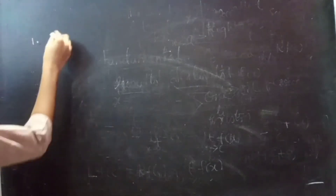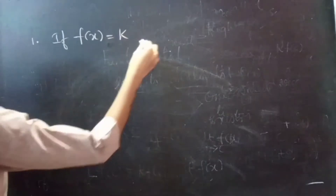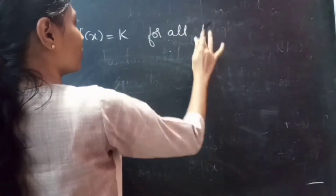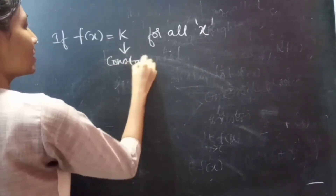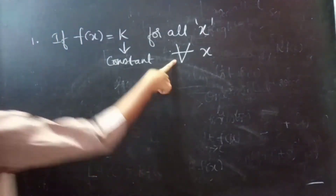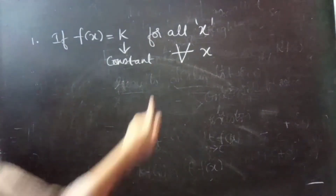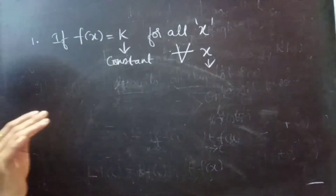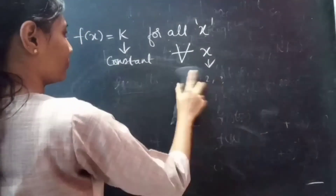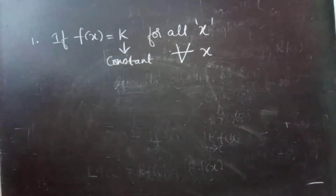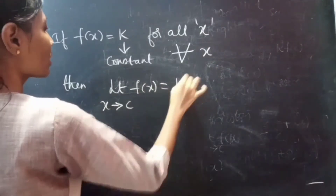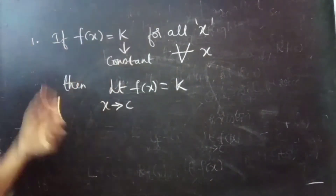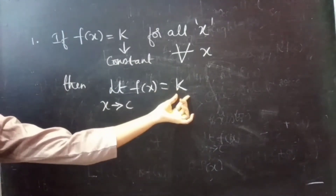So, first result: if f of x equals k for all x — k is nothing but a constant for all x. The symbol here represents 'for all', meaning x can be any number: 1, 2, 3, or anything. If we consider any x and f of x equals to k, then limit x tends to c, f of x equals to k. That is, if f of x is constant, then the limit of that function will be a constant.